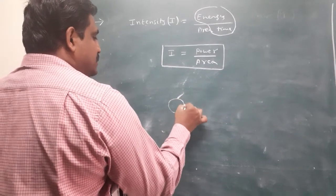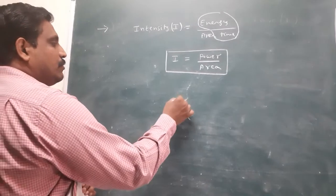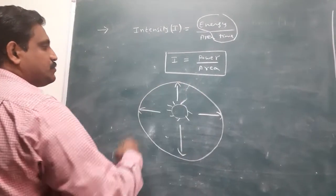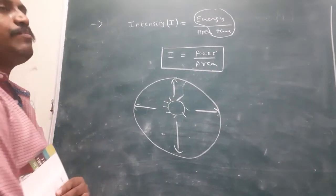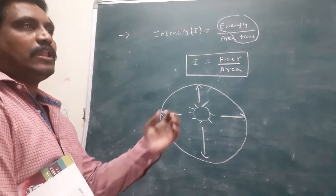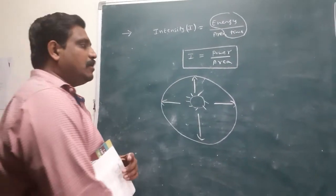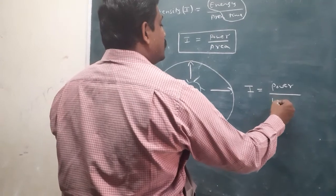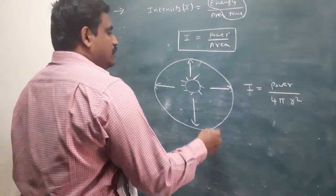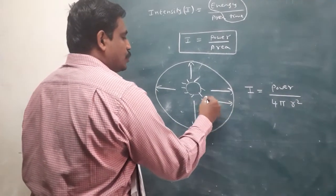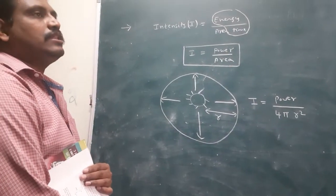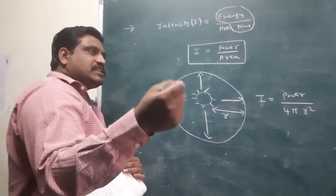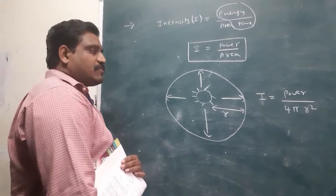Generally, take the Sun as an example. The Sun is considered a point source. It emits light in all directions, forming a spherical wavefront. In this case, the intensity formula is power by area. The surface area of a sphere is 4πR², where R is the distance from the Sun to the given point.